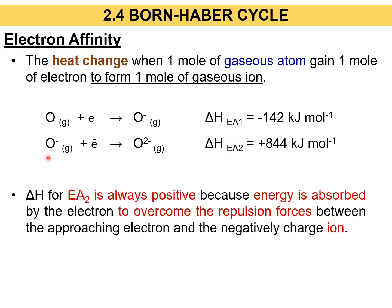When carrying out the second electron affinity, its energy will be positive. This is because the electron needs to overcome the repulsion forces between itself and the negatively charged ion. The second electron affinity only applies when the atom forms an ion with a charge greater than -1, like oxygen which forms O²⁻. In the second electron affinity, you take the singly negative ion from the first electron affinity and add another 1 mol of electrons to form a doubly negative charge, O²⁻.